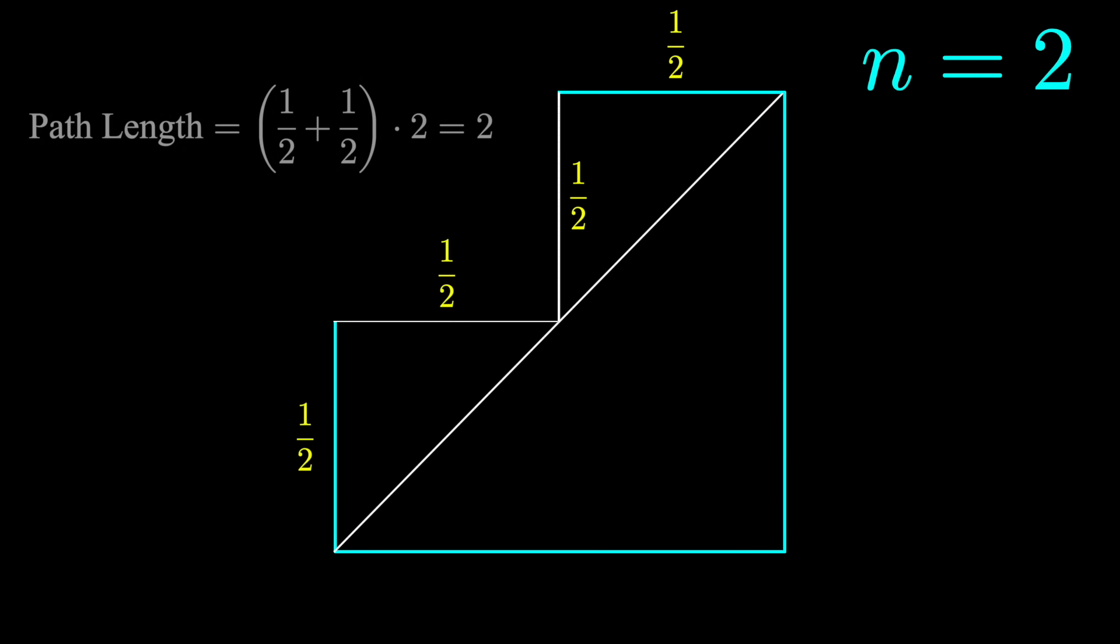However, if we do a similar process for the lengths of these paths, starting at n equals 1, the staircase has a path length of 1 plus 1 is 2. At n equals 2, the staircase has path length 1 half plus 1 half times 2 is 2.